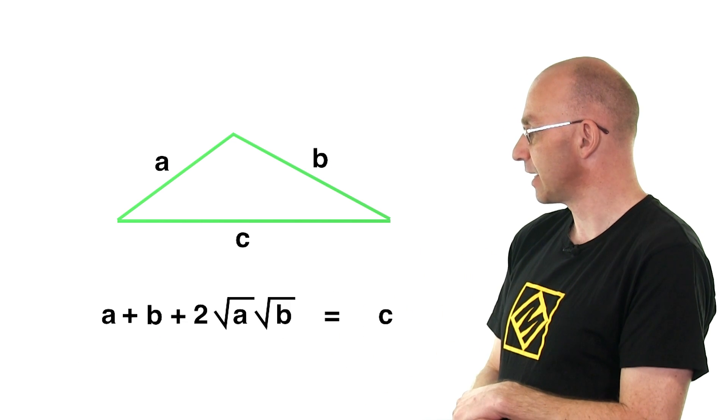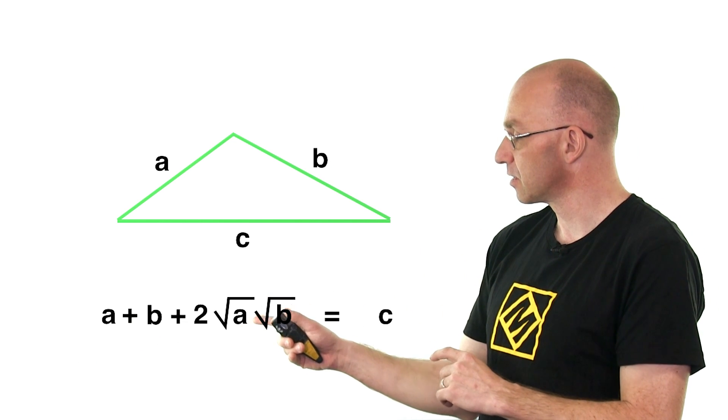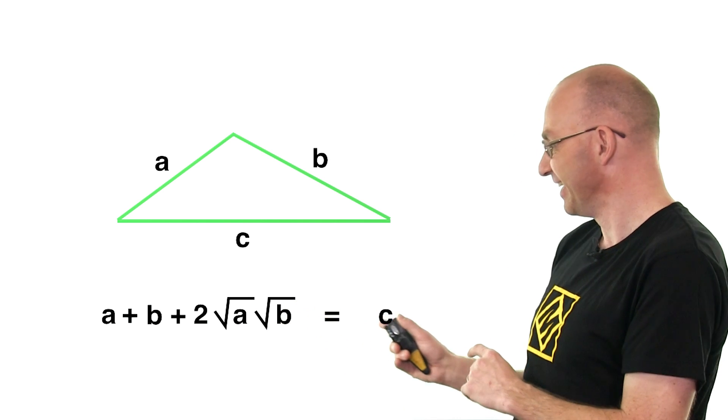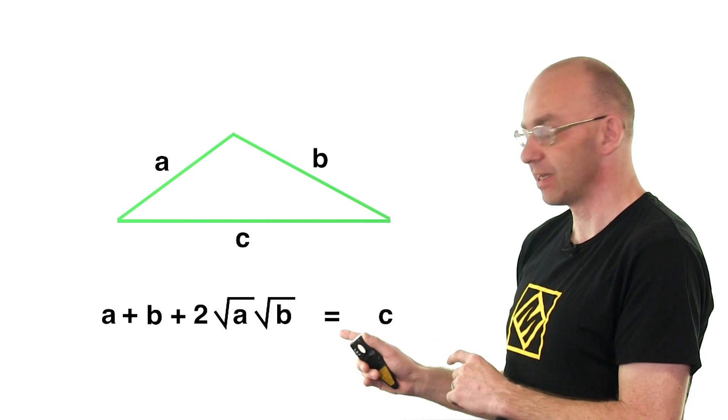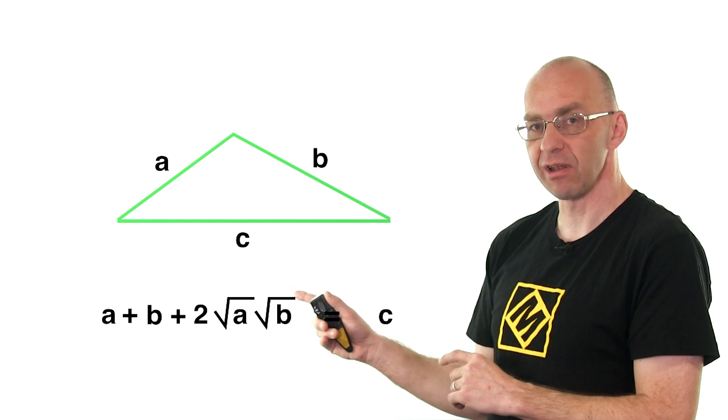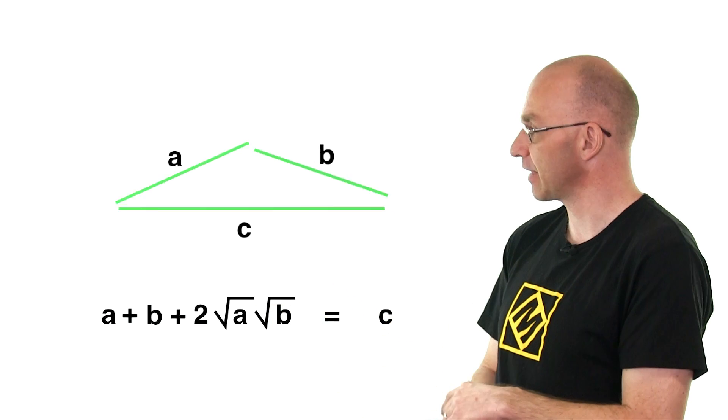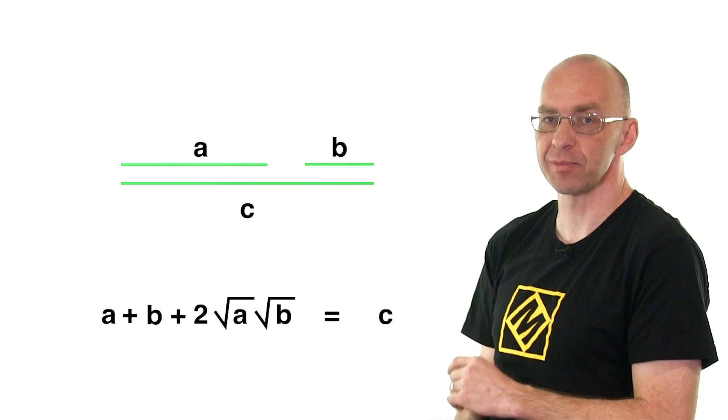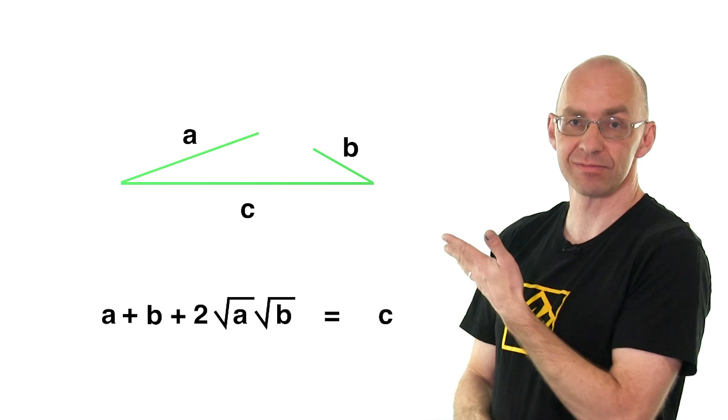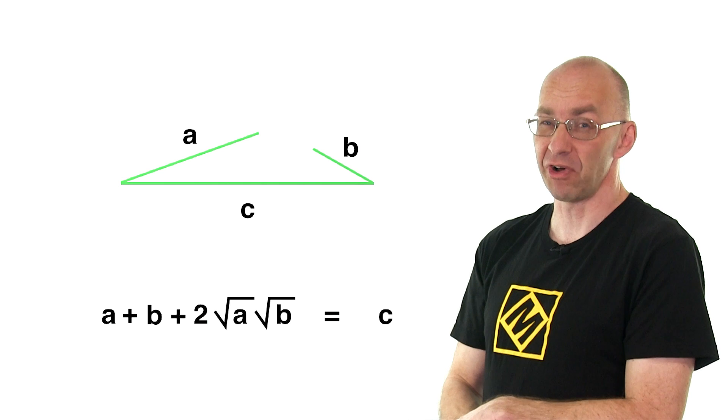Now just rearrange this a little bit and you get A plus B plus something equals C. So basically what this says is that C is a little bit longer than A and B put together. So there's A, there's B, and C is a little bit longer. And again, it's pretty obvious. You can't make any triangles out of this.